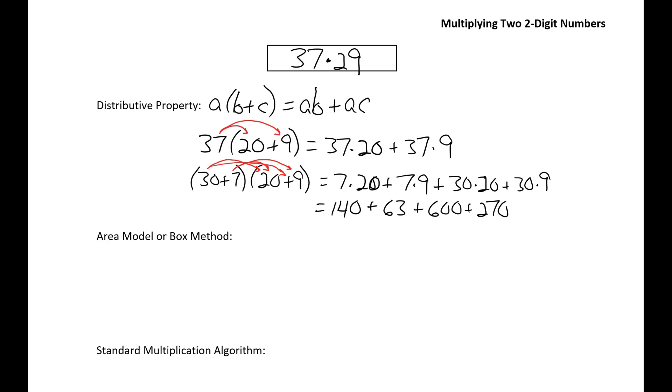And if I add all these together, I'll put this over here on the side. 10 plus 7, 17. 7, 8, 9, 12, and 10. I get 1,073.